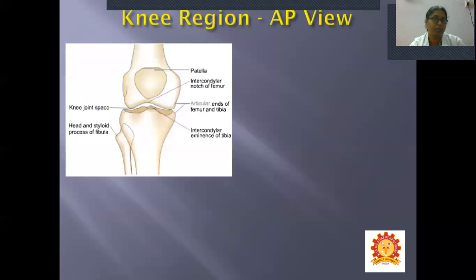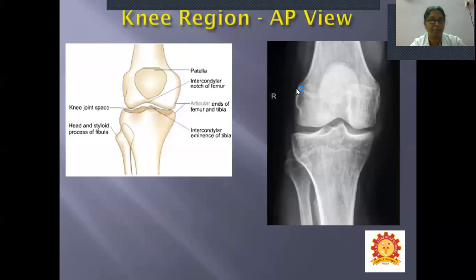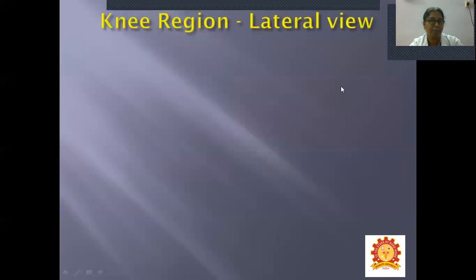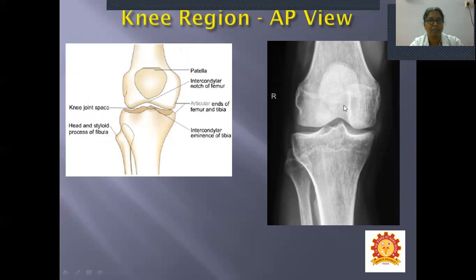Moving to the knee region — AP view. R stands for the right knee joint. Structures visible include the patella, intercondylar notch of the femur, lateral and medial condyles of the femur, lateral and medial condyles of the tibia, head of the fibula, and intercondylar eminence on the upper surface of the tibia. The space between is called the knee joint space.